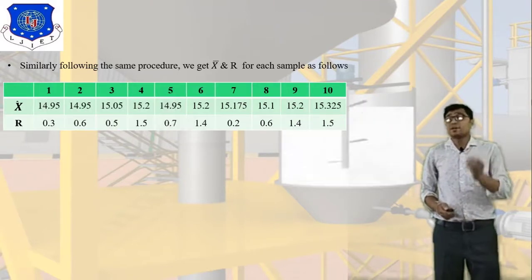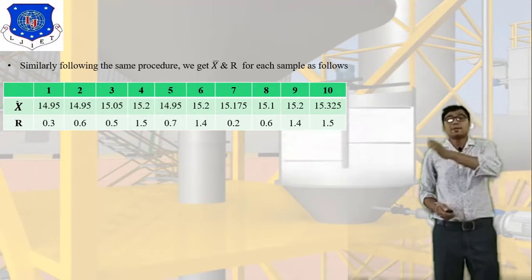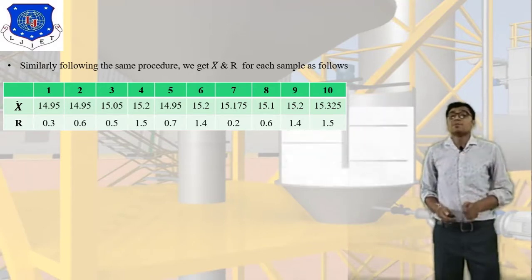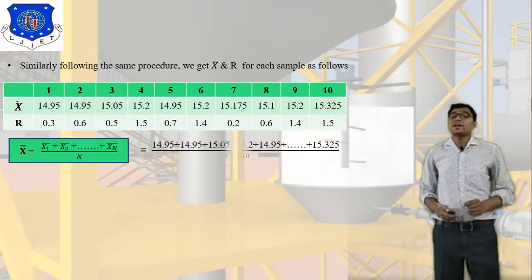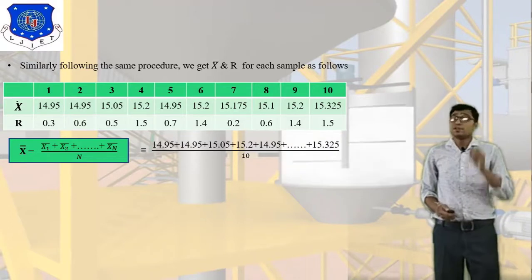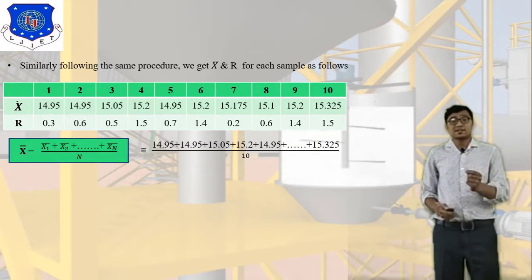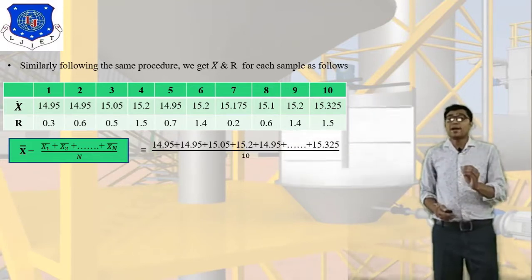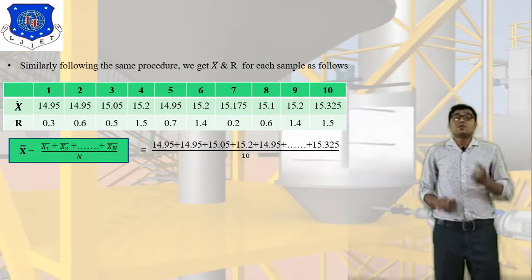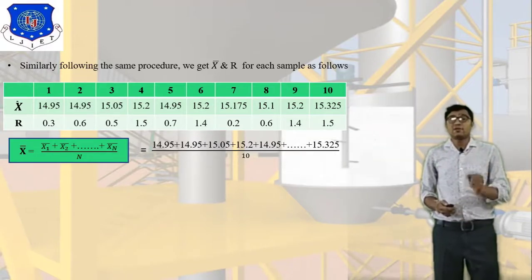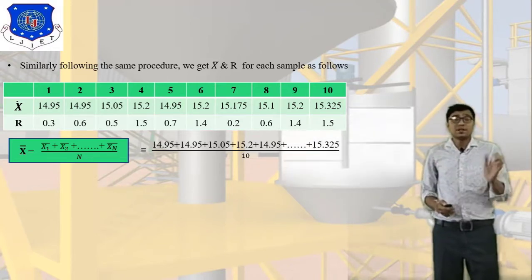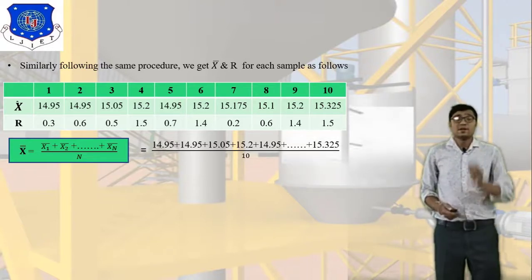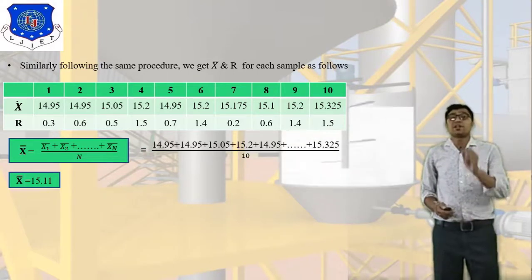Following the same procedure we calculate X-bar and R for samples 2 through 10. Next, we calculate X-double-bar: X-double-bar = (14.95 + 14.95 + 15.05 + ... + 15.325) / 10, which gives X-double-bar = 15.1.